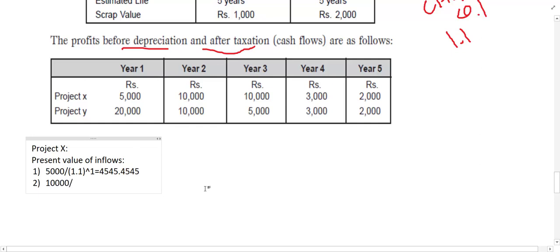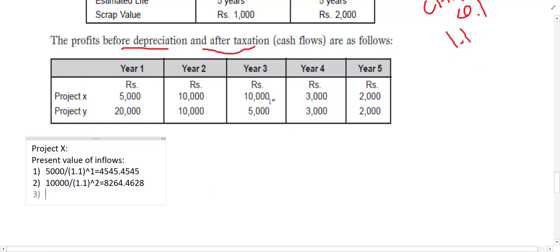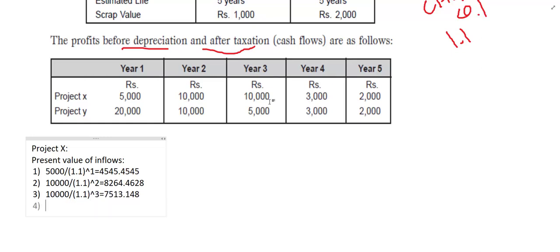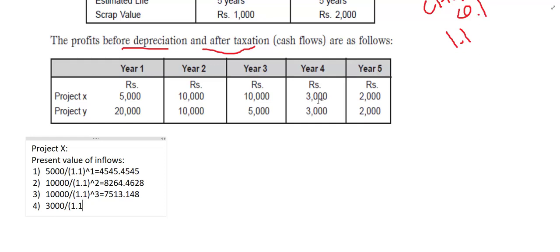For Year 2, the inflow is 10,000. Calculate: 10,000 divided by (1.1) to the power of 2. Press equal and you get the Year 2 present value. For Year 3, the inflow is again 10,000: divide by (1.1) to the power of 3, press equal and find the Year 3 present value.